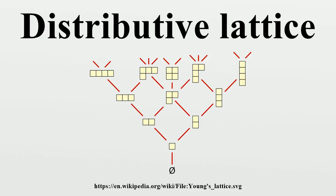Generalizing this result to infinite lattices, however, requires adding further structure. Another early representation theorem, now known as Stone's representation theorem for distributive lattices, characterizes distributive lattices as the lattices of compact open sets of certain topological spaces. This result can be viewed both as a generalization of Stone's famous representation theorem for Boolean algebras and as a specialization of the general setting of Stone duality.